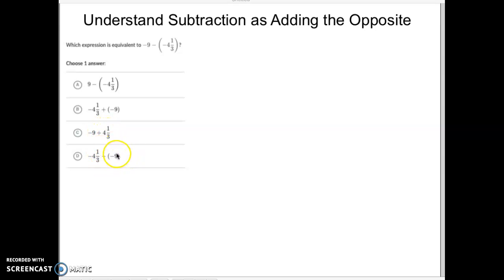And here, nope, this one still has a subtraction sign in it. So this one is letter C. Let's do another one. All right, so this one right here. Which expression is equivalent to 2 minus 35?